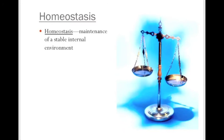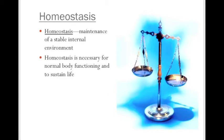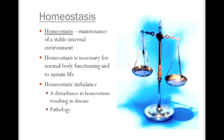Homeostasis is basically the maintenance of a stable internal environment. If you imagine that you're standing and balancing and you start to fall one way, it's what you do to come back to balance — how you counteract something that's throwing you off balance. This is happening throughout our bodies all the time. Homeostasis is necessary for normal body functioning and to sustain life. In fact, a homeostatic imbalance is what we would call a pathology or disease. Basically, pathology — one of the medical terms for disease — is simply when homeostasis is not achieved, whether it's out of balance temporarily or requires some intervention such as medicine to bring it back.